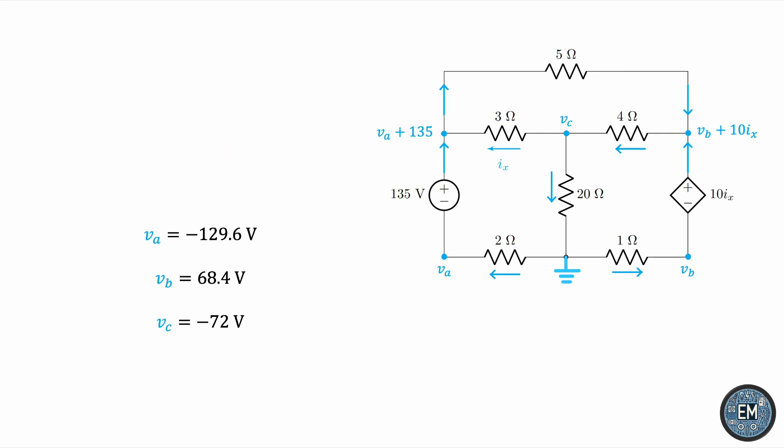Remember, the question was to find the power dissipated in the 20-ohm resistor. What is the formula for power? It's either voltage times current, the square of the current times resistance, or the square of voltage divided by resistance. The easiest one to use here is V squared over R, because we have VC written down. So, it's a direct substitution, nothing is to be calculated, and this works out to be 259.2 watts.